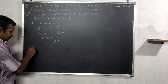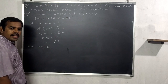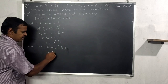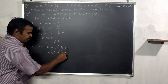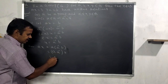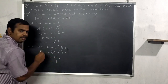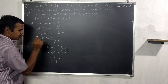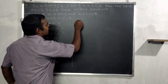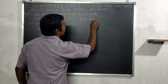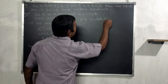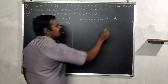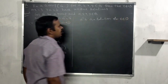Now verify that x = a inverse b satisfies equation one. Substituting: a times (a inverse b) = (a times a inverse) times b = e times b = b. So ax = b is satisfied. Therefore a inverse b is a solution of equation one.